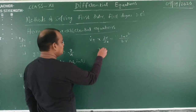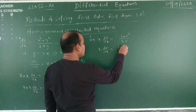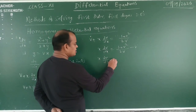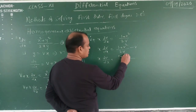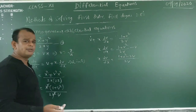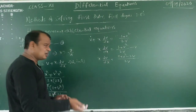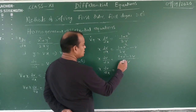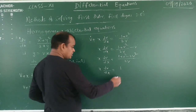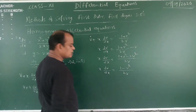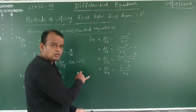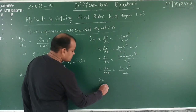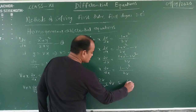Now: x·(dv/dx) = (1 + v²)/(2v) − v. Taking LCM 2v: x·(dv/dx) = (1 + v² − 2v²)/(2v) = (1 − v²)/(2v). Separating variables: 2v/(1 − v²) dv = dx/x.